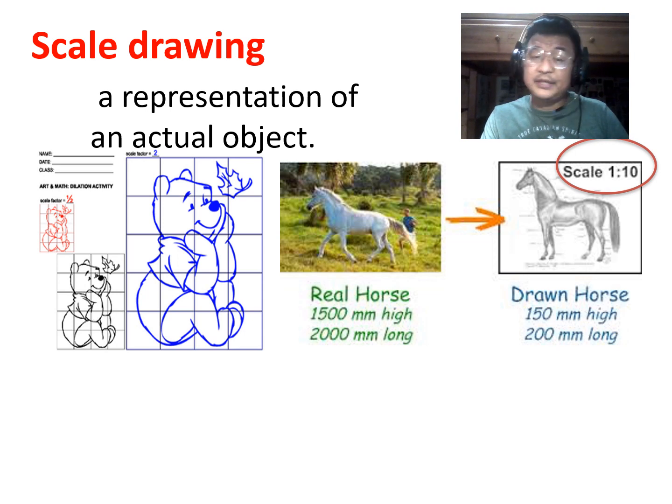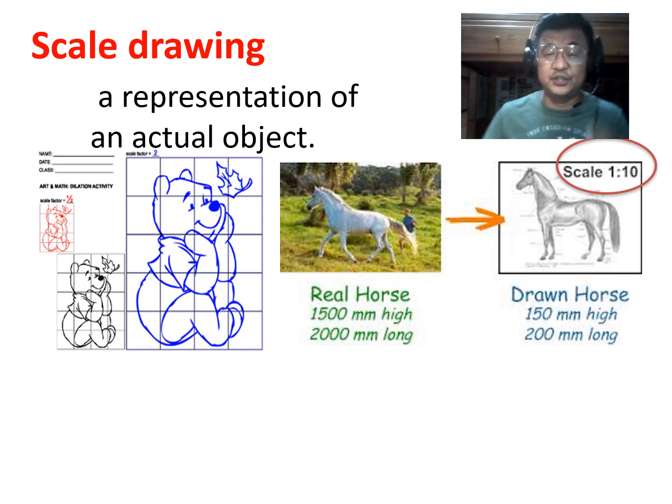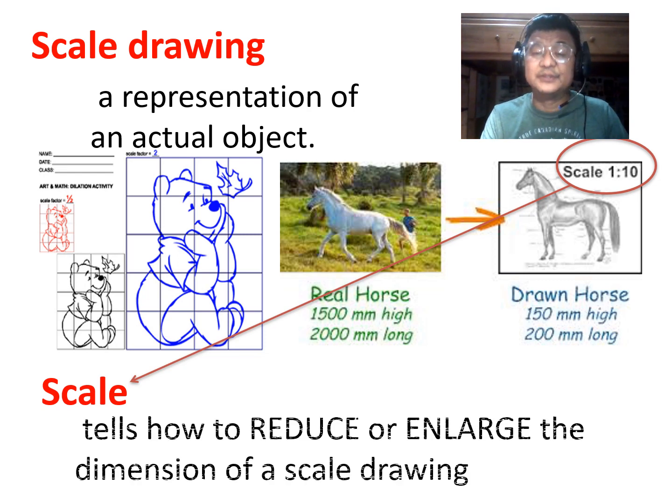So every time you see scale drawings, they will give you a scale. A scale is like a ratio or a fraction usually written on the corner of a drawing. So it's telling you here 1 is to 10, meaning for every measurement of 1 in that drawing is 10 times in real life. There you go. That is called the scale. And it tells you whether the image is reduced or enlarged. And it is the dimension of the scale.